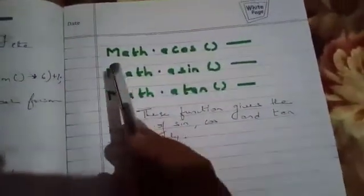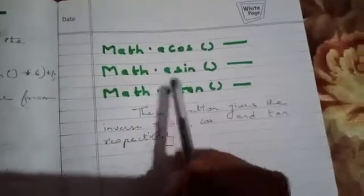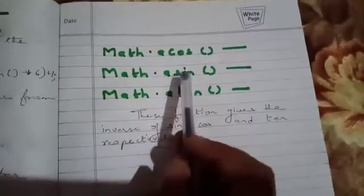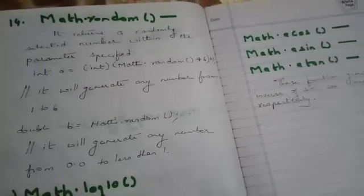Many more functions are available, like Math.log10, which gives the value with base-10 logarithm. There are also Math.sin, Math.cos, and Math.tan, which generate the standard trigonometric values. Additionally, Math.acos, Math.asin, and Math.atan provide inverse trigonometric values — 'a' meaning inverse. Students, please do the worksheet questions in your fair copy and show me the result. Thank you.